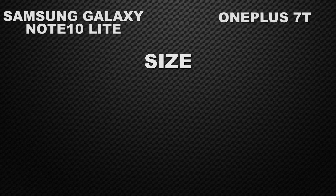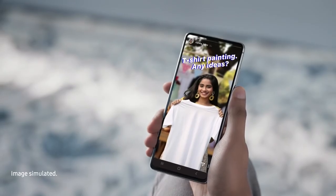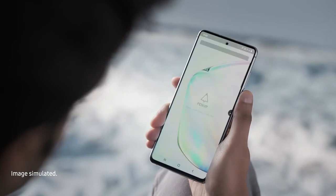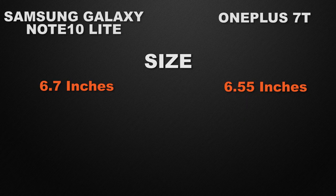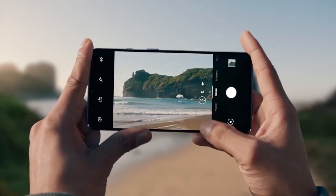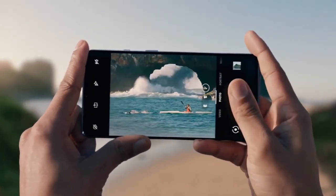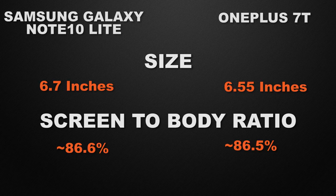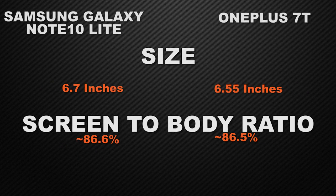Let's talk about the display features of the devices. Samsung Galaxy Note 10 Lite comes with 6.7 inches of display and OnePlus 7T comes with 6.55 inches, so the winner is Samsung Galaxy Note 10 Lite. Talking about screen-to-body ratio, Samsung Galaxy Note 10 Lite has 86.6% and OnePlus 7T has 86.5%, so there is a tie between them.